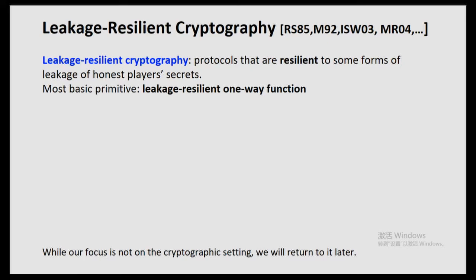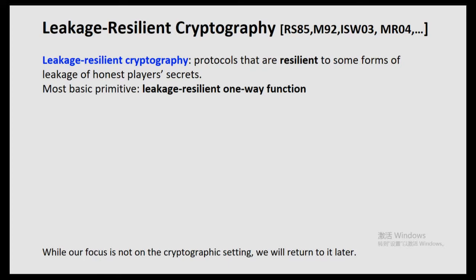What is leakage-resilient cryptography? We aim at designing cryptographic protocols that are still secure with the presence of some leakage from the honest player's secret. In cryptography, this is a notion motivated by practice. At a high level, adversaries are abstracted as being black box — the adversary interacts with the honest player by sending messages. However, in reality, cryptosystems suffer from so-called side-channel attacks. In a side-channel attack, the adversary can somehow look into the memory of an honest party and learn some extra information about the honest party's secret. Therefore, we want our crypto scheme to be leakage-resilient.